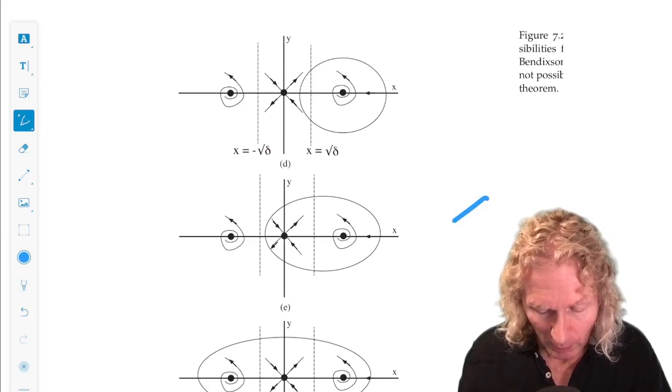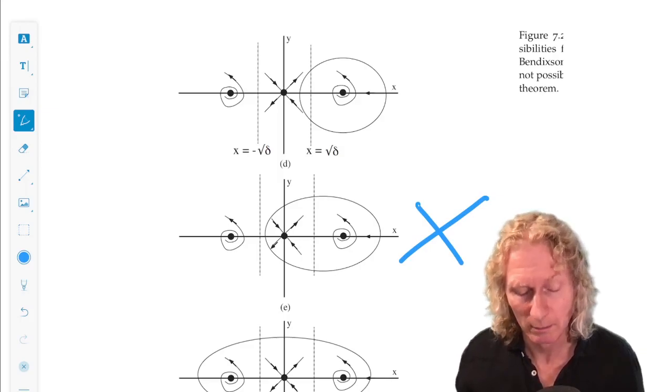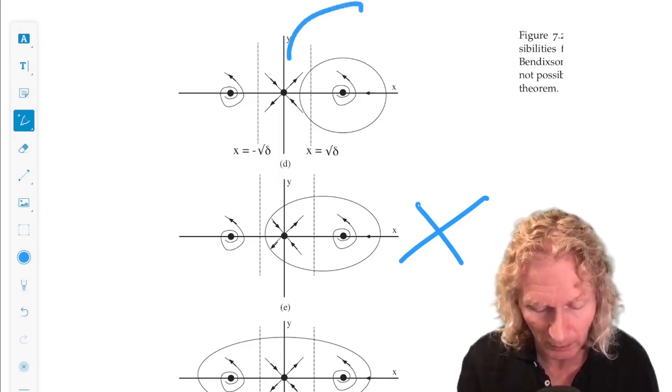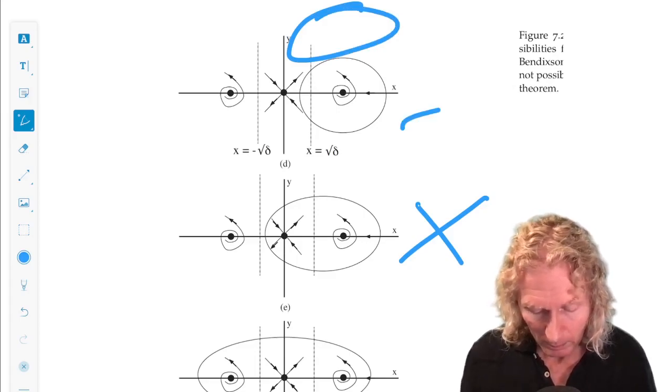Well, this is not possible because we have to have an odd number of fixed points. We know we have to have at least one. So we can't have anything like this, even though it overlaps the region. These are possible, but this one is impossible.